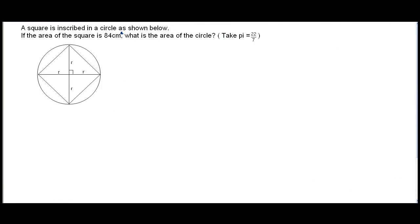Hello, here is a P6 question on circles. A square is inscribed in a circle as shown below. If the area of the square is 84 cm², what is the area of the circle? Take pi equals 22 over 7.